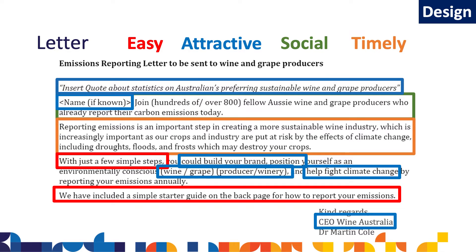Social: indicating that others do this behavior — that more than 800 have already signed up — frames it as a descriptive norm, motivating people to be part of the idealized in-group. Timely is addressed in two ways. Firstly, the costs of not reporting are brought into the present to tackle present bias, by highlighting the currency of climate change through mentioning tangible impacts such as we heard from Sarah yesterday. And secondly, as mentioned earlier, we're going to send these out during tax time.